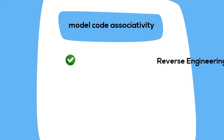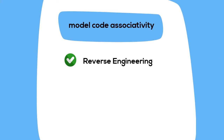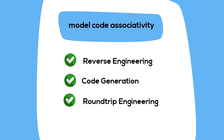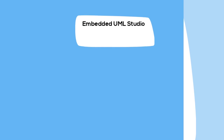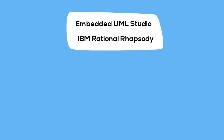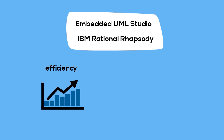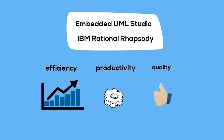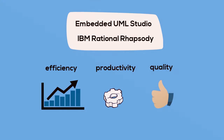It is based on reverse engineering, code generation, and roundtrip engineering. The Embedded UML Studio, which is based on the IBM Rational Rhapsody modeling tool, offers these features and is the key to engineering efficiency, productivity, and quality.